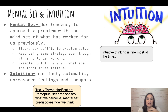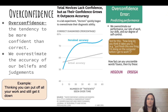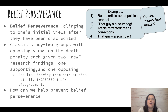Intuition is our fast, automatic, and unreasoned feelings and thoughts. It's not just gut instinct - it's more like our implicit knowledge, unconscious knowledge we've absorbed but aren't consciously aware of. We can't explain why we think or feel what we do because it comes through our unconscious. Overconfidence - another review word - is the tendency to be more confident than correct. For example, thinking you can do all your work the night before and still get it done, and then it doesn't happen.